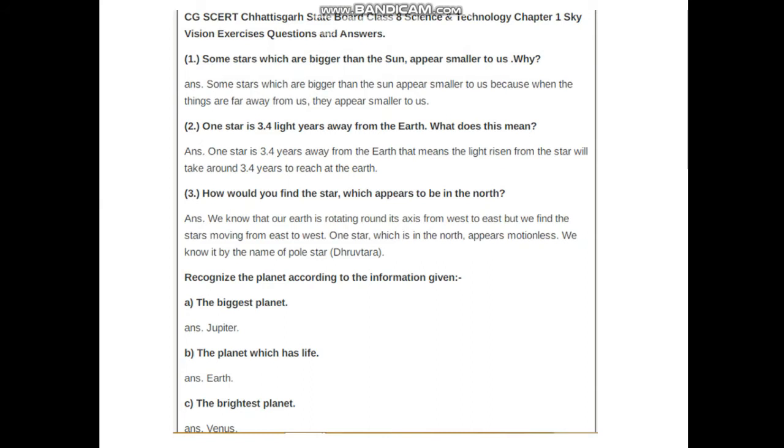Question number three: How would you find the star which appears to be in the north? We know that our earth is rotating around its axis from west to east, but we find the stars moving from east to west. One star which is in the north appears motionless. We know it by the name of pole star, Dhruvatara.